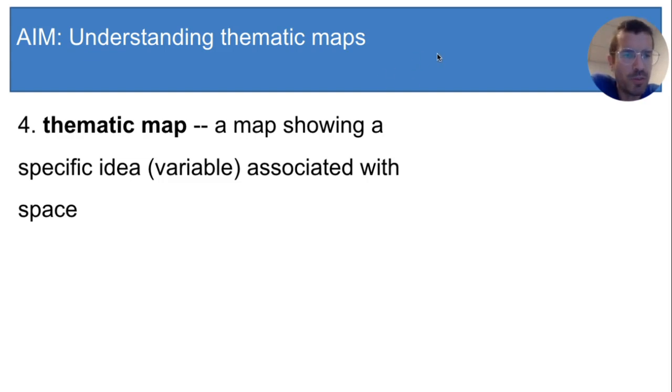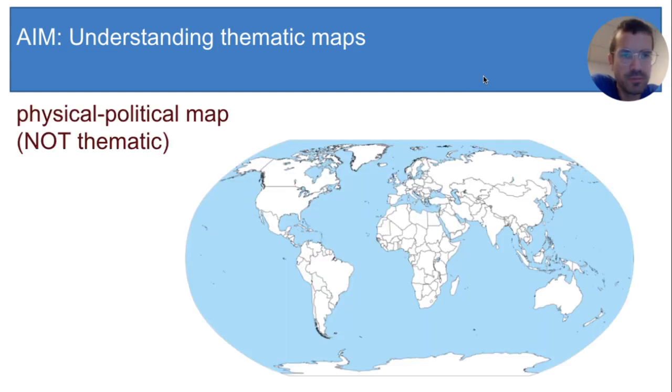Alright, before I show you the thematic map, let's take one more look at the other kind of map, the physical political maps, the kind you're used to. This one shows the borders of 193 countries recognized by the United Nations. This is not a thematic map.